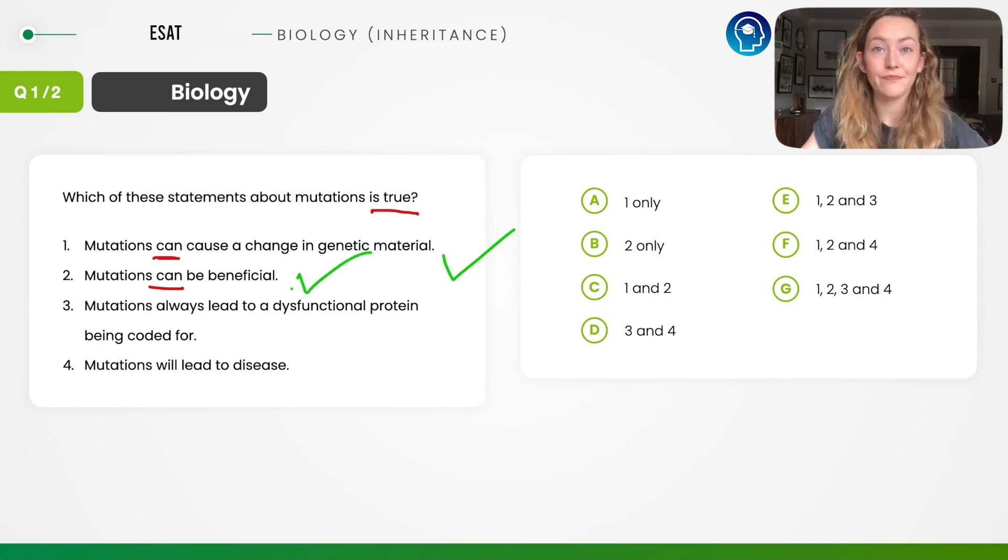Statement three: mutations always lead to a dysfunctional protein being coded for. They've used this word always. It's quite a definitive term, an extreme word to use, and you need to be really careful of these terms in BMAT. Always, never, etc.